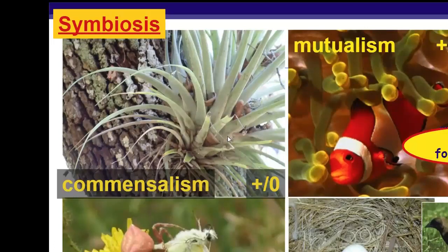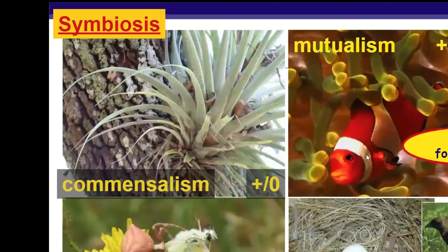Here's another example of commensalism: epiphytes, also called air plants. You probably saw some of these if you went anywhere south on vacation. They're actually getting moisture from the air, and they're connected to usually the bark of trees. They're not hurting the tree itself, but they're benefiting because they have a home. The sea anemone is a common example too. The sea anemone benefits because the clownfish, which has a slime layer that won't be hurt by the poisonous sea anemone, has a home and is protected. It attracts other feeder fish to the area, which allows the sea anemone to feed on them.